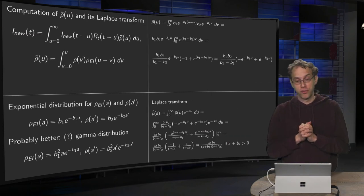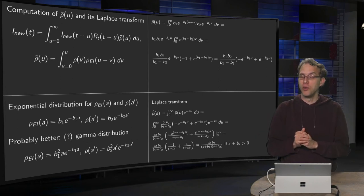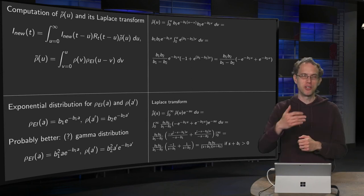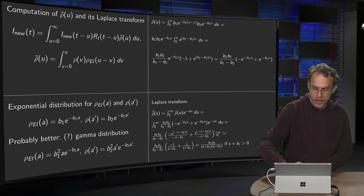Then, later on, we also need its Laplace transform. Fortunately, that is easy. You could even look it up in a table, but that's a bit silly. It's easy to compute. Let's try to compute it. ρ tilde hat of s. How do you compute it? It's your ρ tilde times e to the power minus s u, and integrate with respect to u.